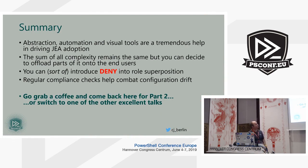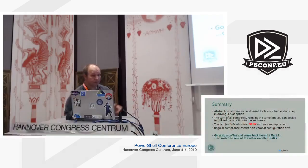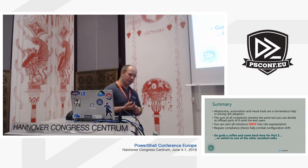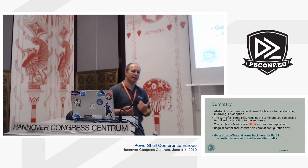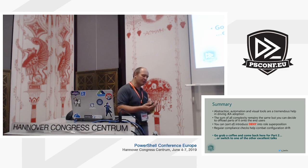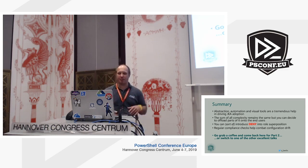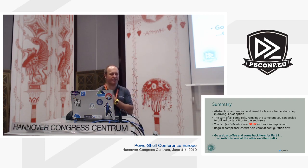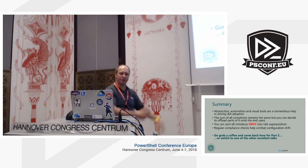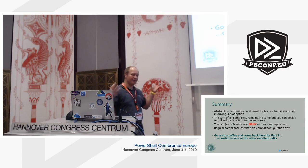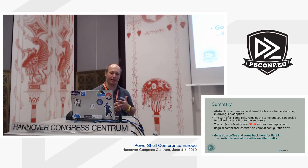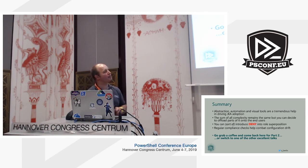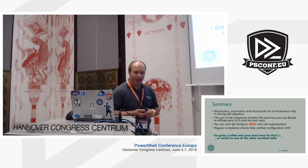That's pretty much all I wanted to show you today. To summarize: abstraction, automation, and visual tools will hopefully help overcome the limitations of JIA adoption by business users. The sum of all complexity remains the same in every delivery model, but in the role-based delivery model you can offload parts of that to the invoker. You can introduce deny into role superposition by having abstraction and correlation exclude the unwanted commandlets or parameters. And you need to run compliance checks on a regular basis to combat configuration drift. Thank you very much. Are there any questions?